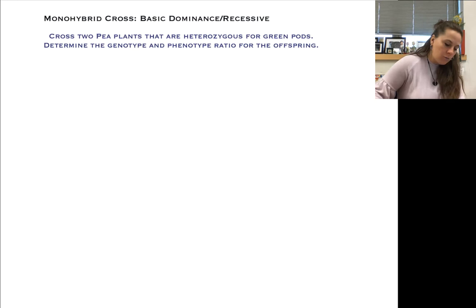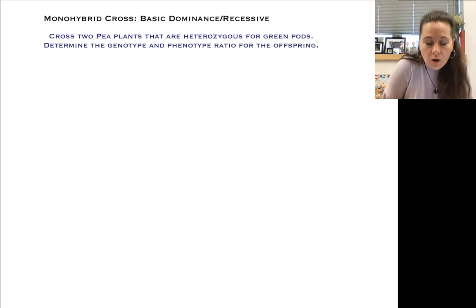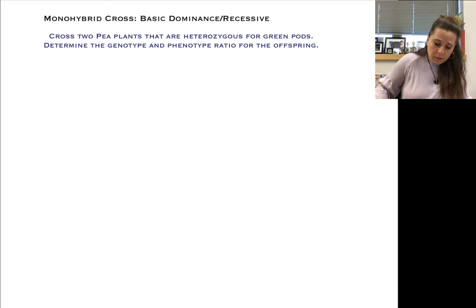This first one is a monohybrid cross with basic dominant recessiveness. We're going to look at two pea plants that are heterozygous for both traits, and from that we're going to determine the genotype and phenotype ratio that we could see in the offspring from these two parents.